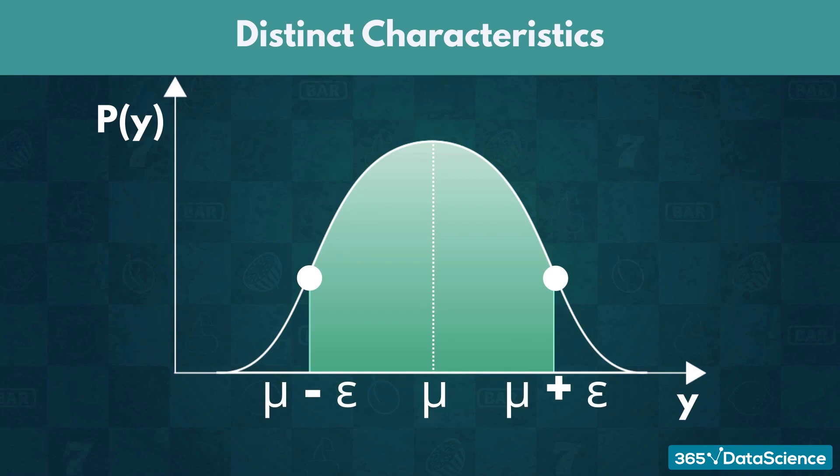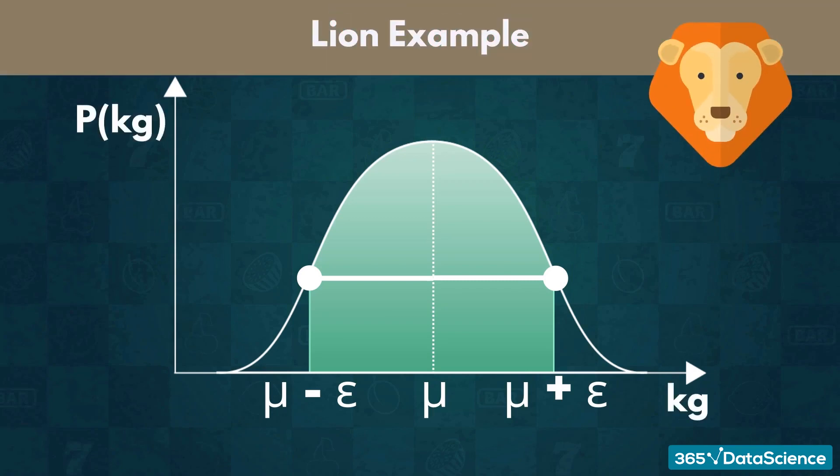That suggests values equally far away, in opposing directions, would still be equally likely. Let's go back to the lion example from earlier. If the mean is 400, symmetry suggests a lion is equally likely to weigh 350 pounds and 450 pounds, since both are 50 pounds away from the mean.